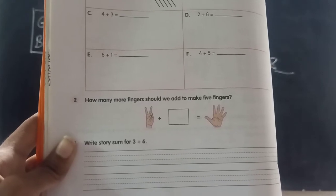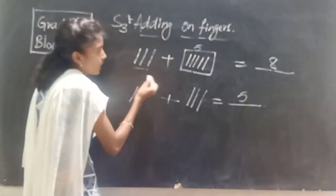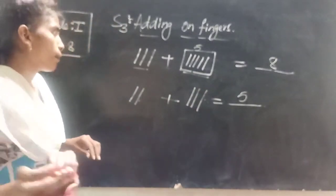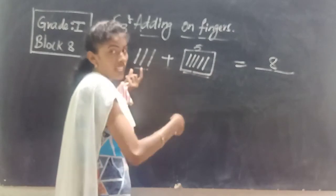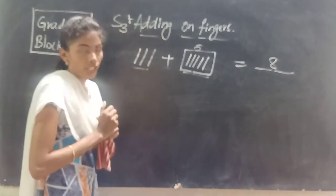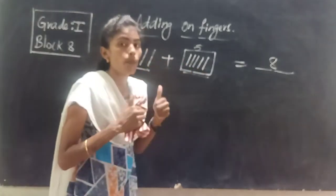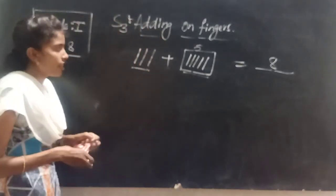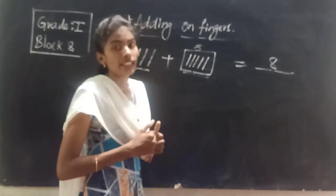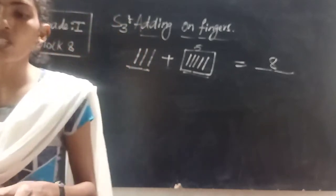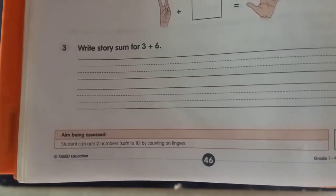Third question: write a story sum for three plus six. Story sum means we have to make a question. For example — I have three chocolates, my mother gave me five chocolates, how many are there in all? Or: I have three balls, my father gave me five more balls, how many balls do I have in all? Like this, frame your own question for three plus six. Any story sum you can use and write.